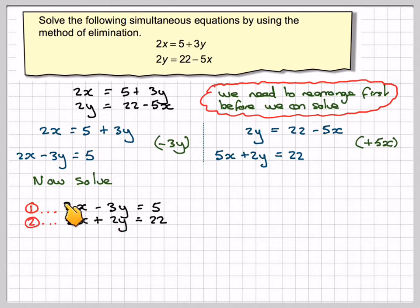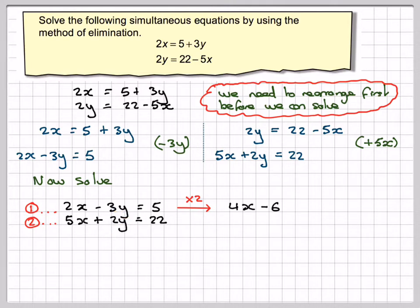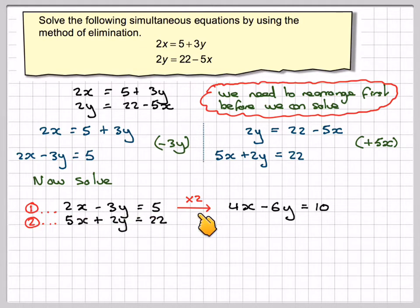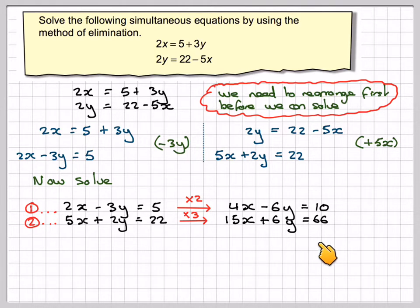Unfortunately none of the numbers are the same, so we have to multiply by numbers. We're going to multiply the top one by 2 and the bottom one by 3, in order to make the y-coefficients both 6. So we get 4x minus 6y is equal to 10, multiplying everything through by 2. This one we're multiplying by 3, so it's going to be 15x plus 6y is equal to 66.